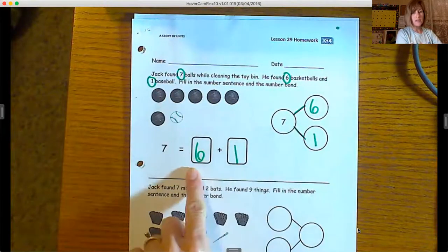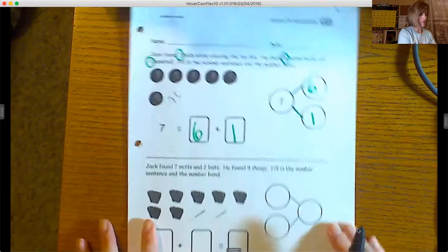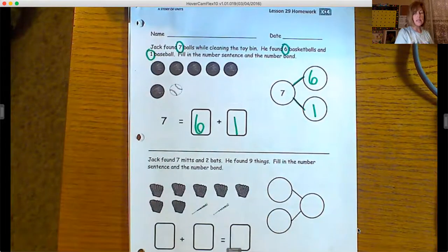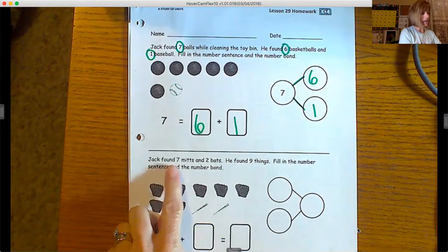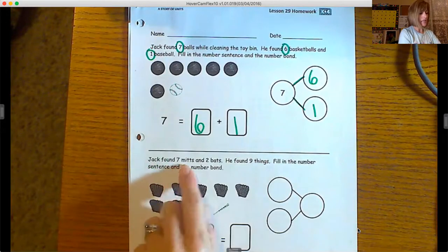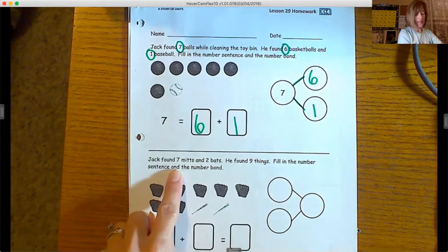Let's look down at this bottom one. I'm going to read it and then hopefully you can do it on your own. So Jack found seven mitts and two bats. Mitts is just another name for like your glove that you use in baseball. So seven mitts, two bats. He found nine things.